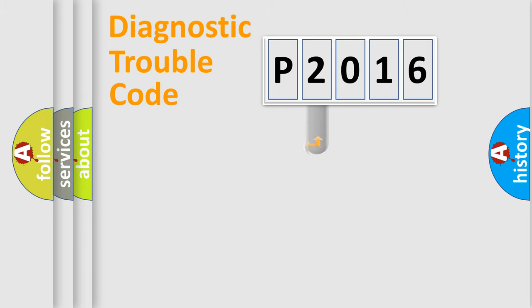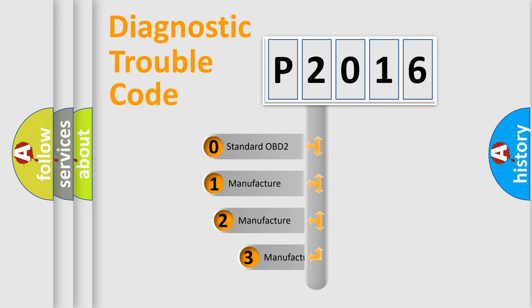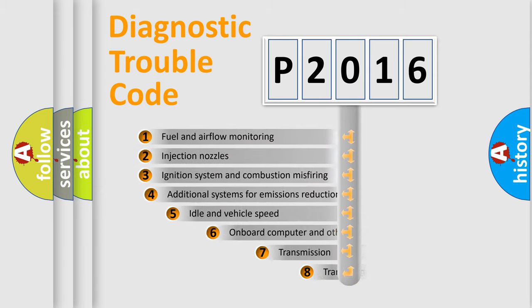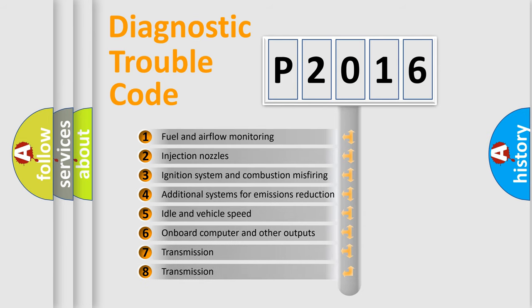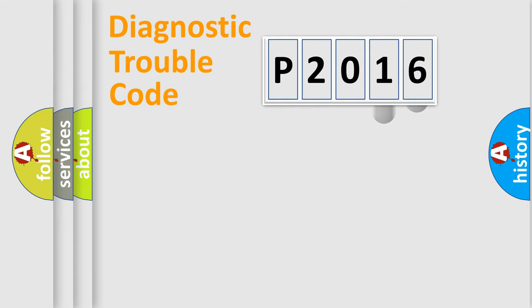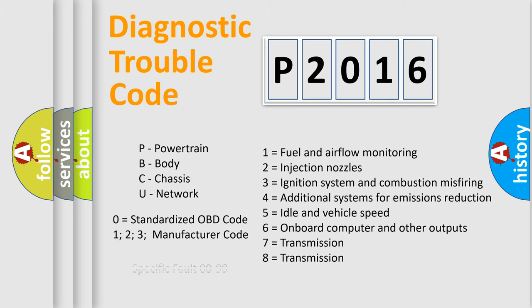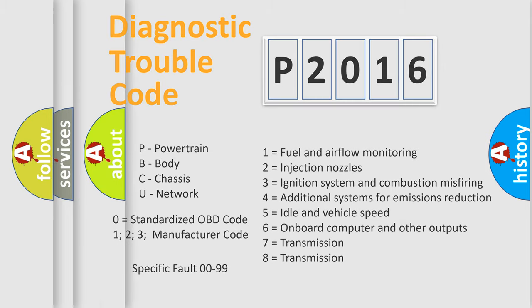This distribution is defined in the first character of the code. If the second character is expressed as zero, it is a standardized error. In the case of numbers 1, 2, or 3, it is a manufacturer-specific error. The third character specifies a subset of errors. The last two characters define the specific fault of the group. This division is valid only when the second character code is expressed by the number zero.